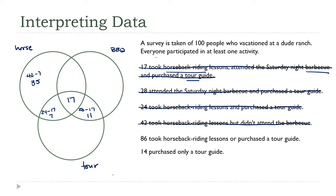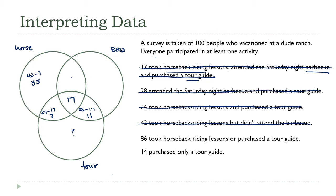86 took horseback riding lessons or purchased a tour guide. That's a problem because I'm missing two values from that region, so I can't fill it in yet — and that's okay, we may have to skip around. So let's try the next one: 14 purchased only a tour guide. The 'only a tour guide' section is here, so that's 14.